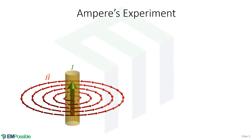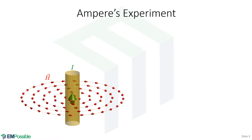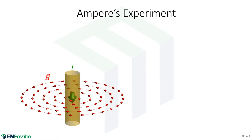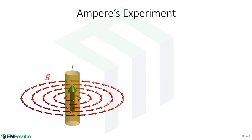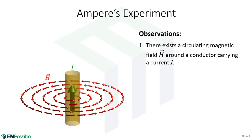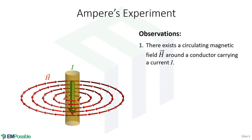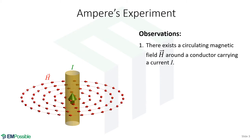So Ampere performed an experiment. He had a wire, passed an electrical current through it, and observed that there was a magnetic field around that. Observation number one: there existed a circulating magnetic field around this wire carrying current I.